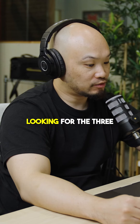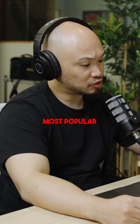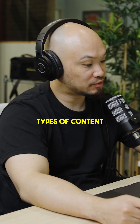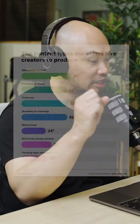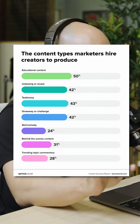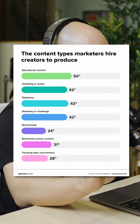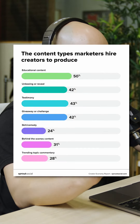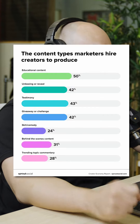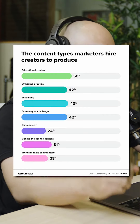A lot of companies are looking for the three most popular types of content. We've got educational content, then we've got unboxing or revealing, and then we've got testimonials. Those are the three to focus on if you're a creator.